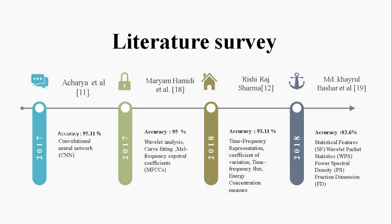In the past, most researchers classified CAD with good accuracy but they used ECG, not PCG. For example, in 2017, 95.11% accuracy was achieved for classification of CAD using CNN. Again in 2017, 95% accuracy was scored using MFCC and wavelet analysis. In 2015, by using ECG signals and energy concentration measures and other techniques, 93.1% accuracy was achieved. In 2018, an accuracy of 82.6% was scored using power spectral density and fractal dimensions.